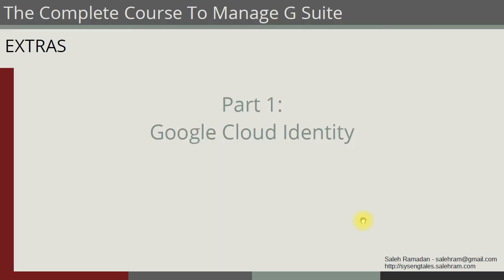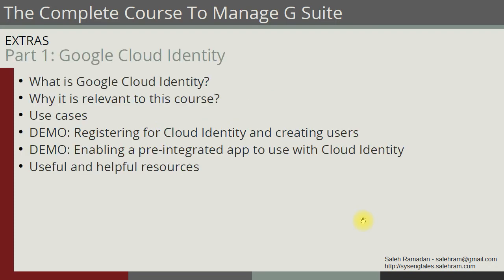I'll start with the Google Cloud Identity service or feature. In this section, I'm going to cover five points or five topics. The first one is what is Cloud Identity — I'll give you an idea about what this service is, and then how this service or offering is related to G Suite and to this course.